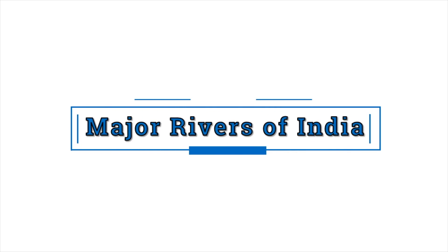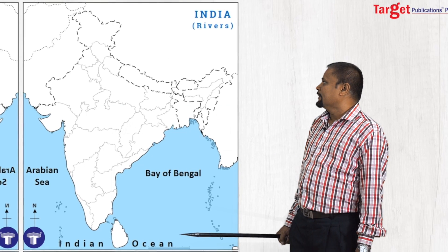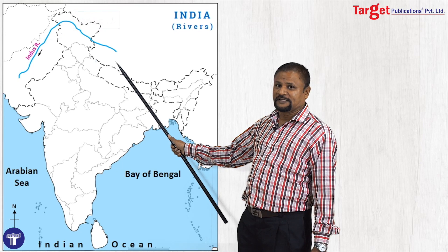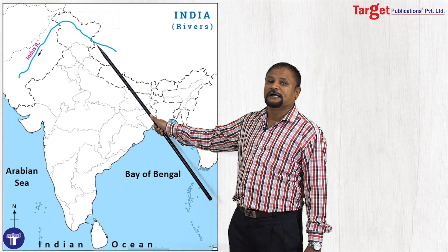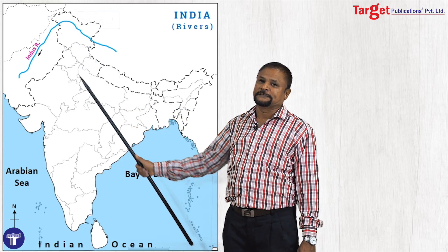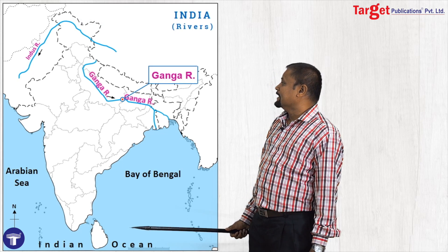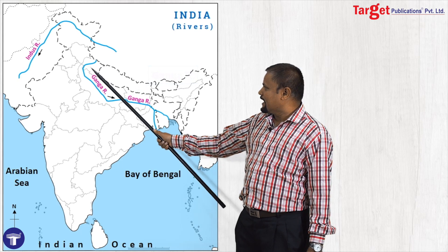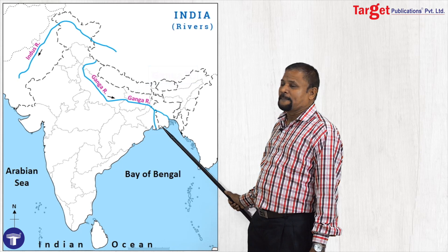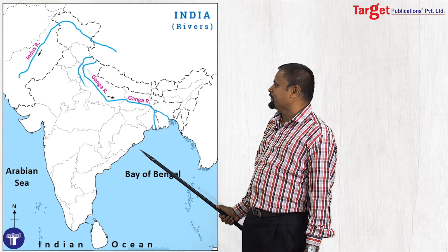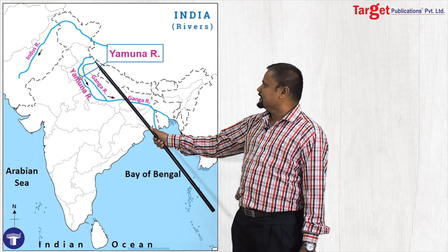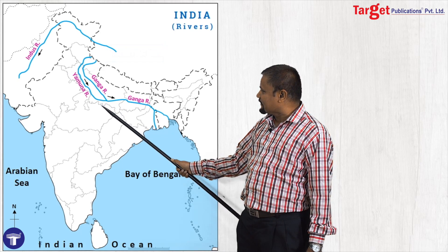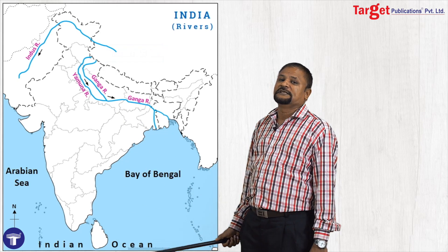Now let us see the major rivers of India. The first important river is the Indus. It is originating from Mansarovar in Tibet, then flows towards west, entering India in Jammu Kashmir, and then goes to Pakistan. Another important river of India is the Ganga — India's longest river and India's holy river. It is originating from the Gangotri glacier and flows towards east, then enters Bangladesh. Ganga has the important tributary that is Yamuna. Yamuna is originating from the Yamunotri glacier and joins with Ganga at Allahabad. This is the confluence of Ganga and Yamuna, where the city of Allahabad is located.